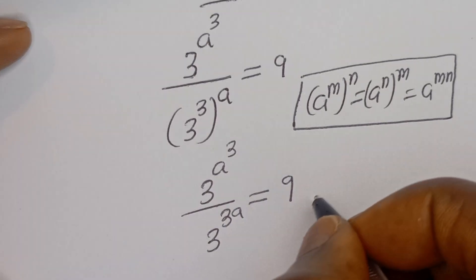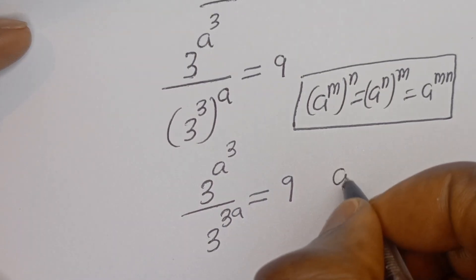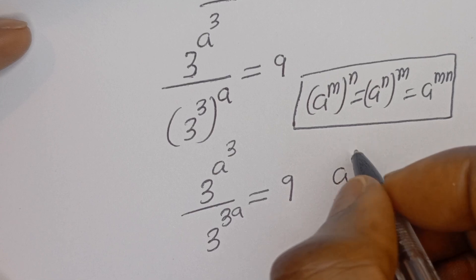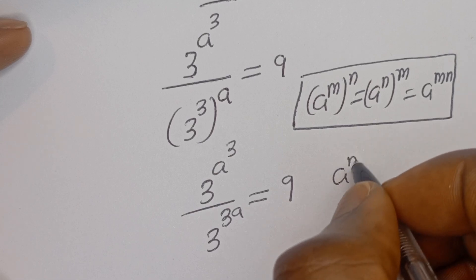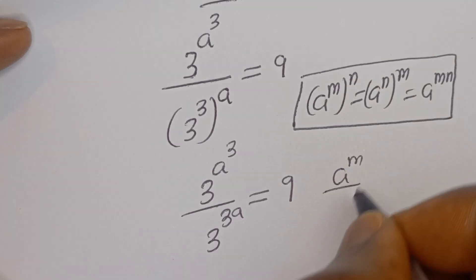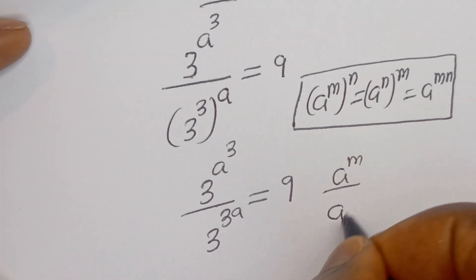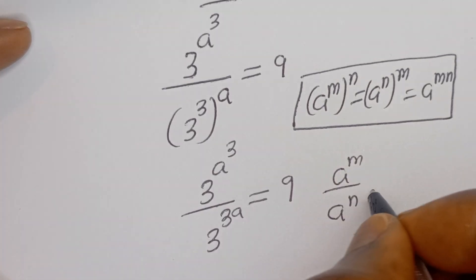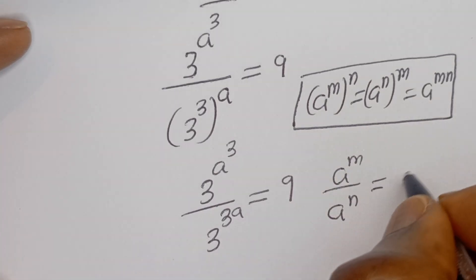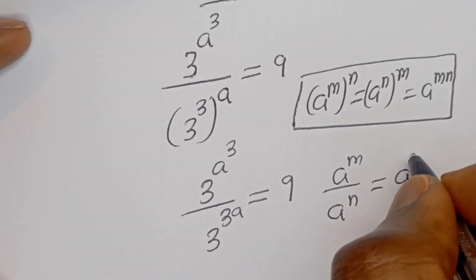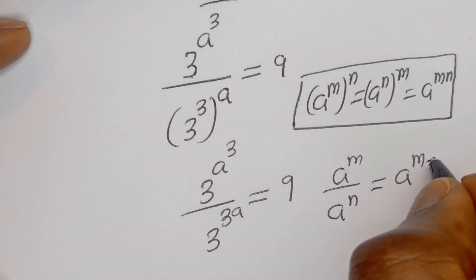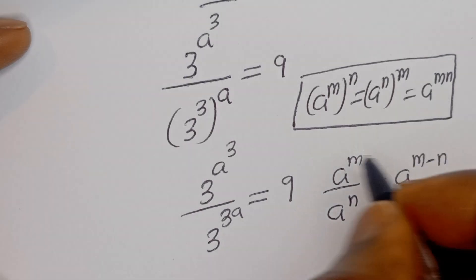Also, if you have A to the power of M divided by A to the power of N, this is equal to A to the power of M minus N.